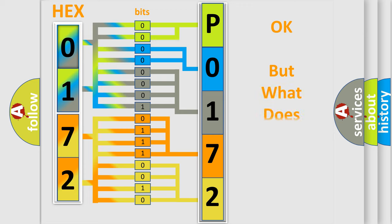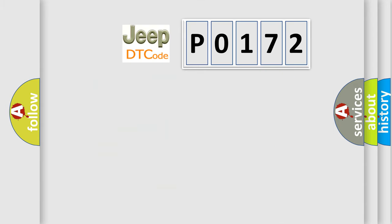We now know in what way the diagnostic tool translates the received information into a more comprehensible format. The number itself does not make sense if we cannot assign information about what it actually expresses. So, what does the diagnostic trouble code P0172 interpret specifically for Jeep and other car manufacturers?